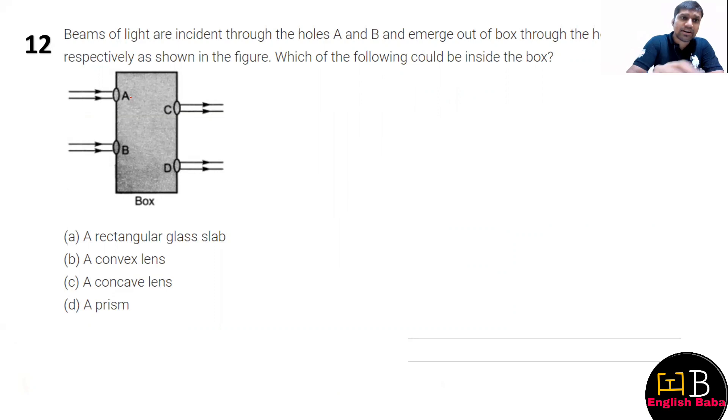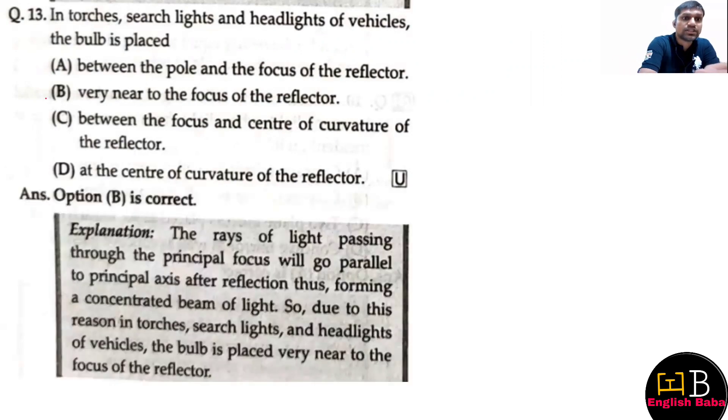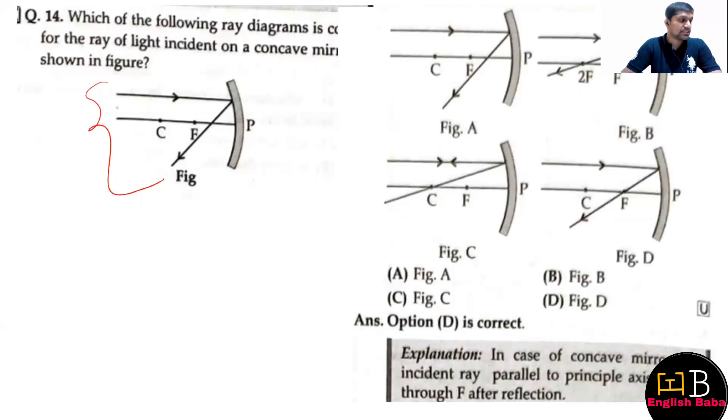Question number twelve: you are given A and B images, what is kept between A and C or B and D. Seeing the pattern formed, the correct answer is they have kept a rectangular glass slab. Question number thirteen: torch, searchlight, headlights of the vehicle - where should the bulb be kept? The correct answer is it should be kept very near to the focus. That way you get virtual and erect image. Next question: which one of the following diagrams is correct? You have to identify the correct image, so the correct answer for this question is option D.